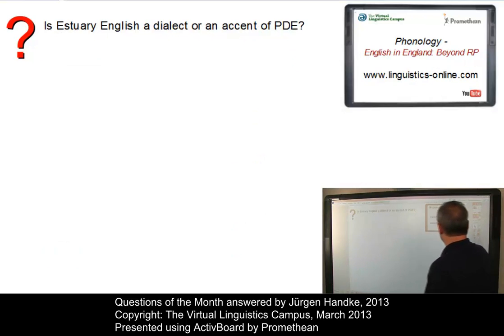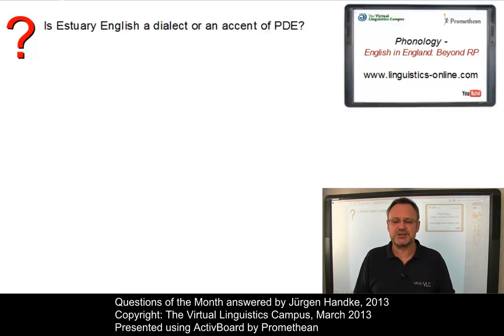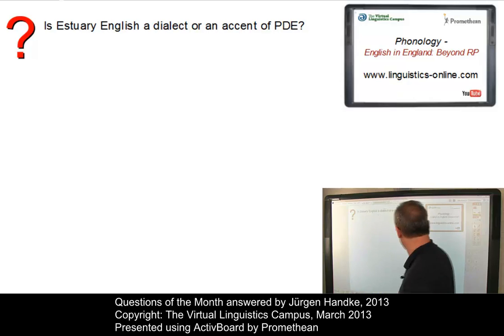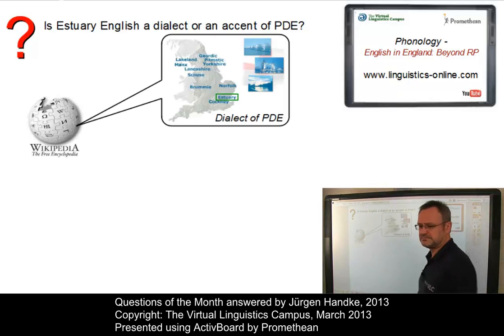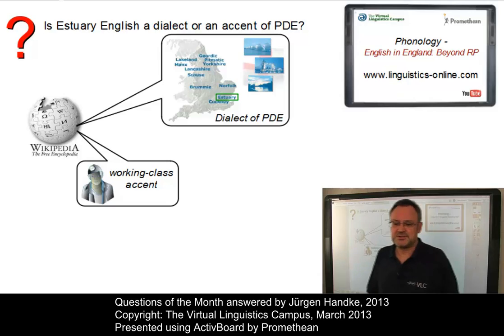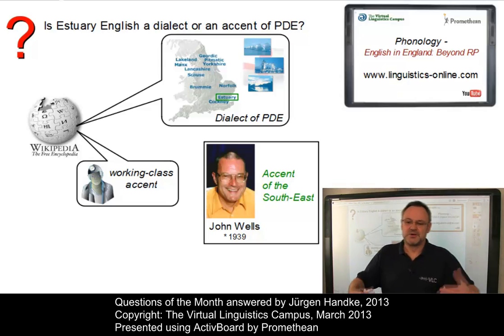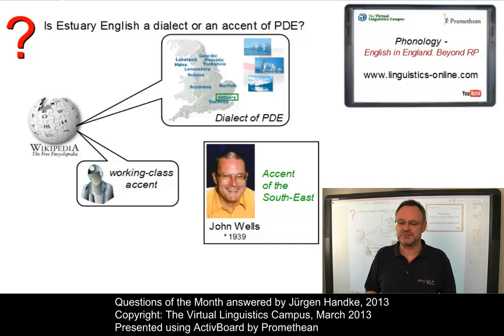A phonological question already discussed in the video 'English in England Beyond RP' concerns Estuary English: is it a dialect or just an accent? This is a perfectly legitimate and very difficult question. Wikipedia contradicts itself by calling Estuary English both a dialect widely spoken in South East England and a working class accent. Perhaps we should stick to John Wells' definition, who said it is standard English spoken with the accent of the South East of England — that is an accent.